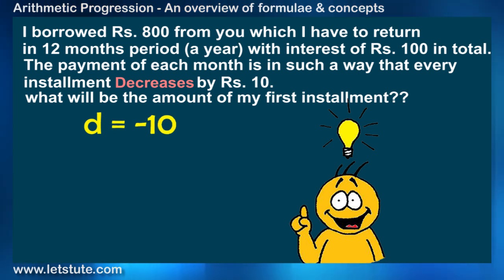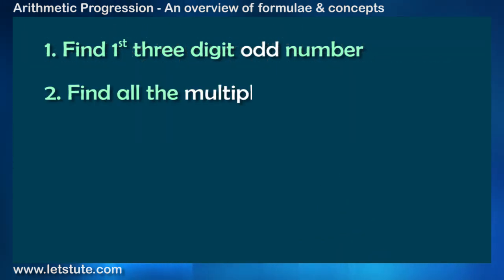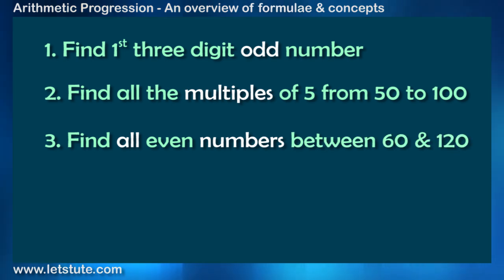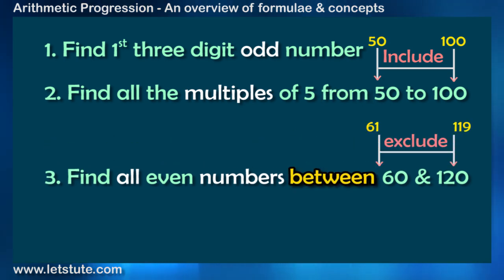So one of the most common types of questions asked is to find the number of terms in some interval like first three digit odd numbers, multiple of 5 from 50 to 100 or some other. So note down some points over here. When the range is given as 'from', include both the end points. And when it is said 'between', then exclude those end points.